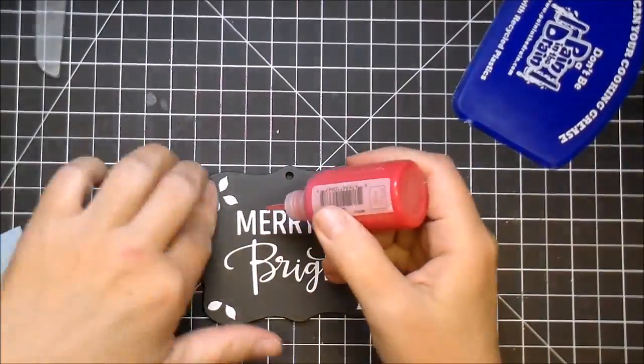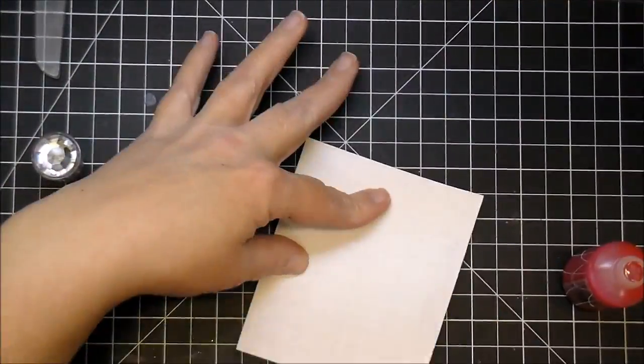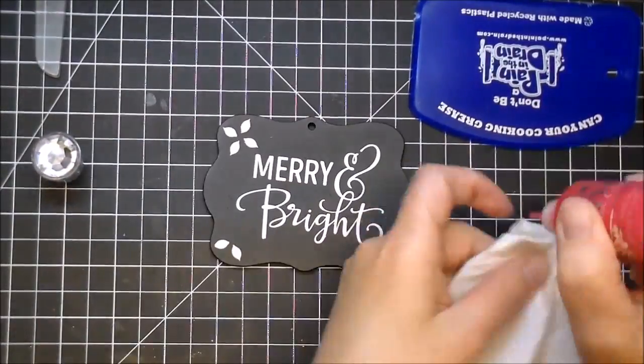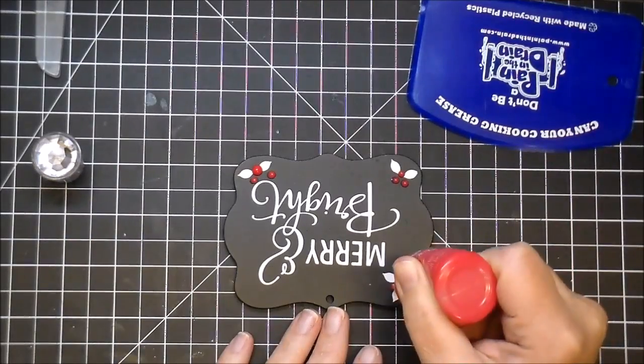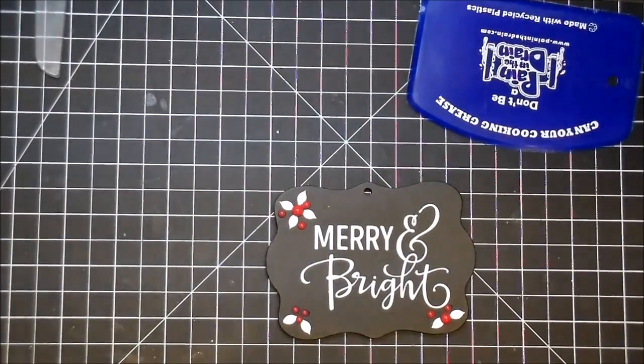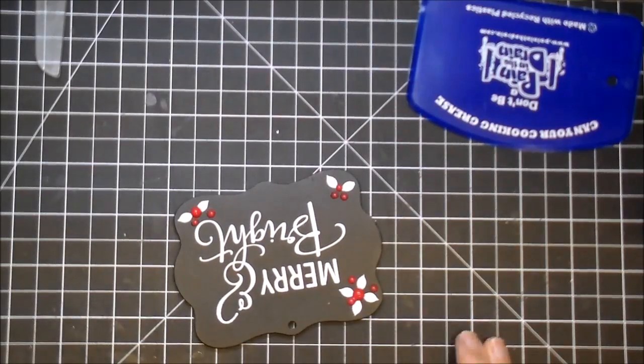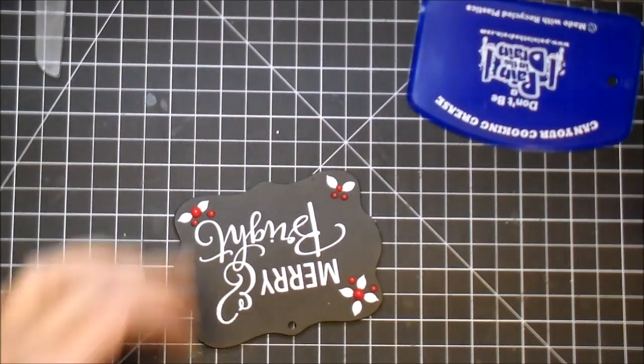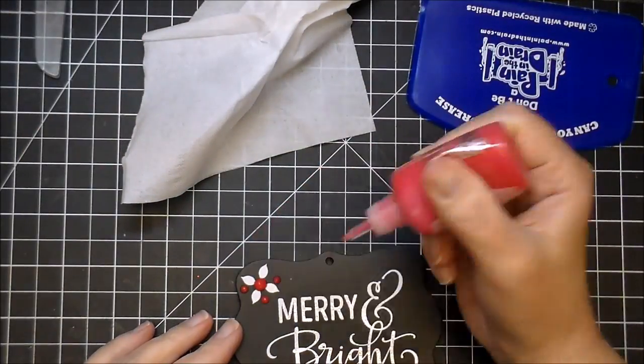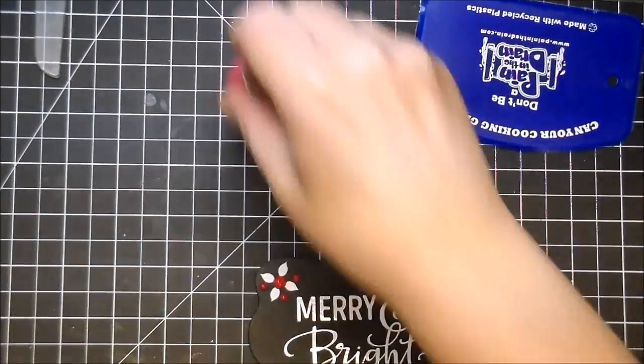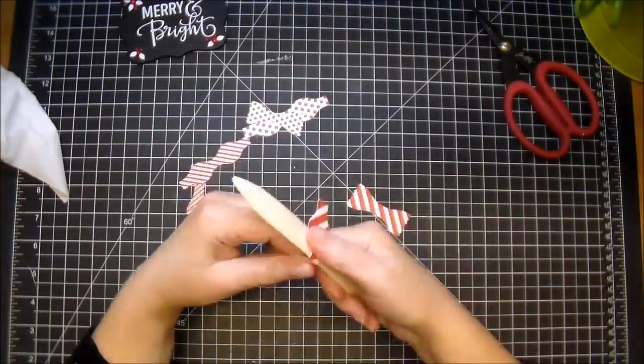I had my chalk markers out just in case I decided I wanted to use chalk markers, but I decided I wanted to go with the vinyl instead. So I'm really pressing those down. And now I pulled out my Nuvo Crystal Drops and I'm adding some berries around the flowers. Some of them ran into each other, so I just used a Q-tip to wipe it off and start over. And it worked out really well.